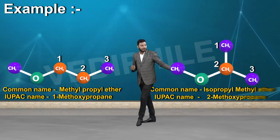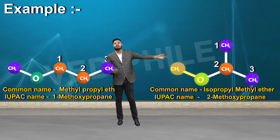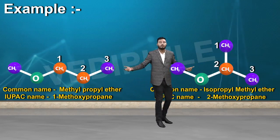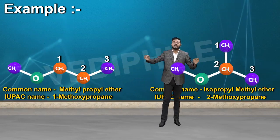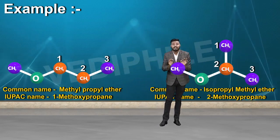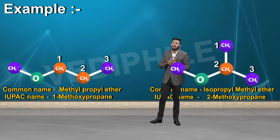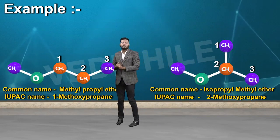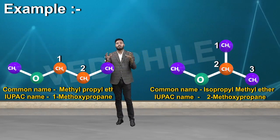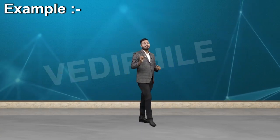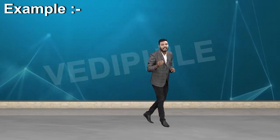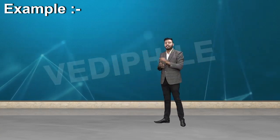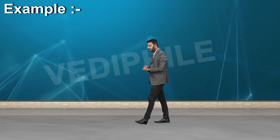पिछले example में 2-methoxy बोला था क्योंकि वहाँ 2nd carbon से methoxy लगा हुआ था। इसलिए 1 या 2 mention करना जरूरी है। अब अगर ether के एक side alkyl part और दूसरी side aryl part लगा हुआ हो, तो उसका नाम कैसे लिखेंगे — उसके बारे में बात करते हैं।